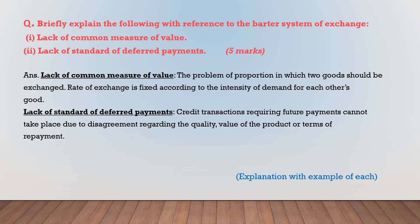This is another question I took from past papers to highlight that your preparation needs to be in depth. The common error made in this type of question is that many students write about lack of double coincidence of wants when the question asks for lack of common measure of value. Most students, instead of explaining the problem of deferred payment, write about its solution. Therefore, while preparing, pay attention to the explanation of these points and make sure that you write the correct explanation in the exam.